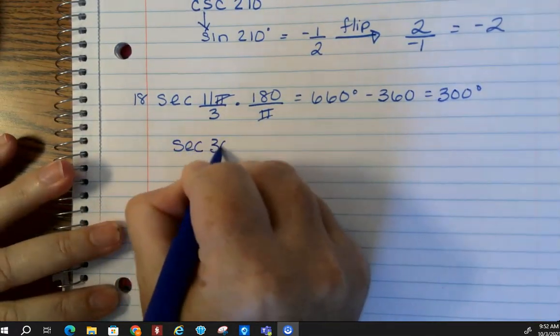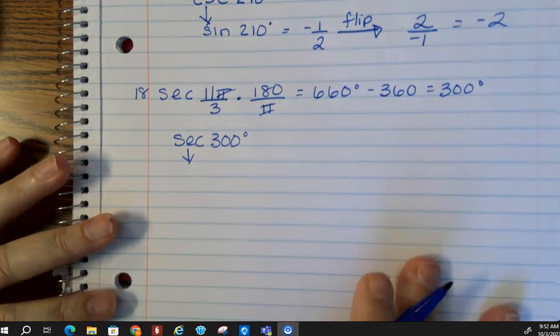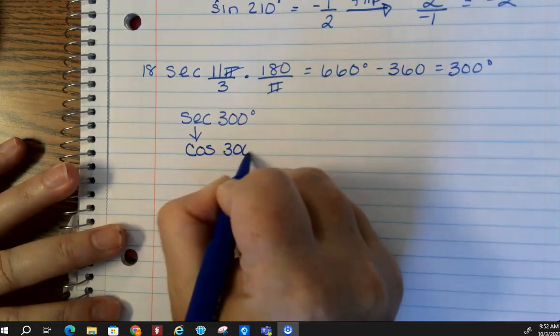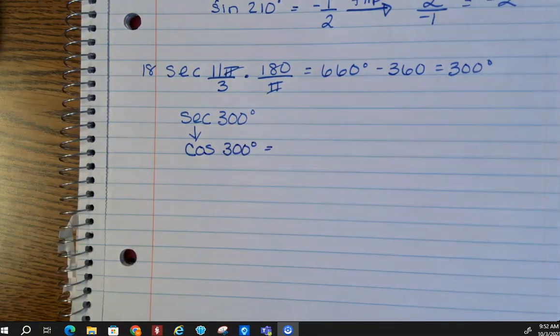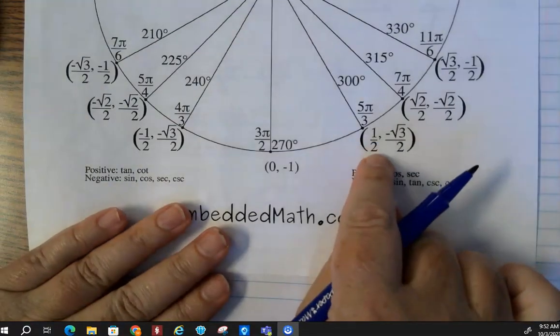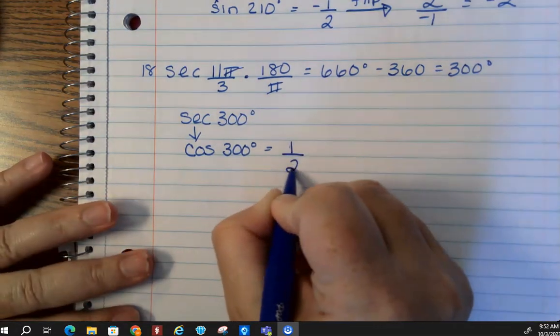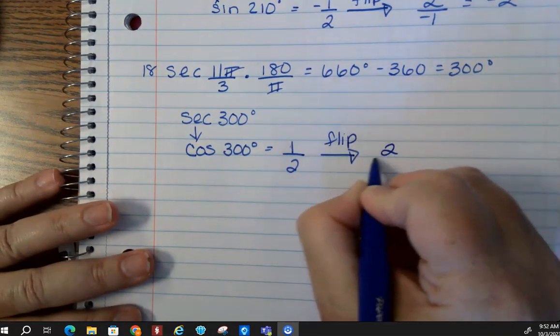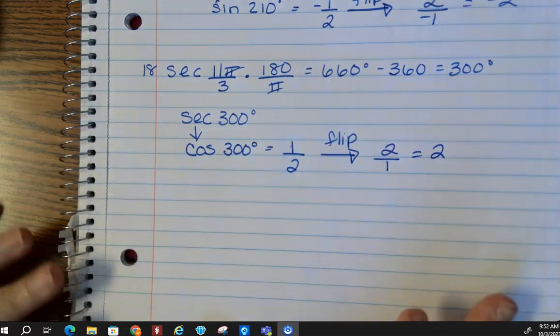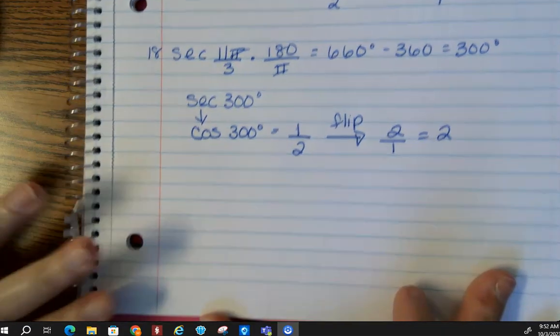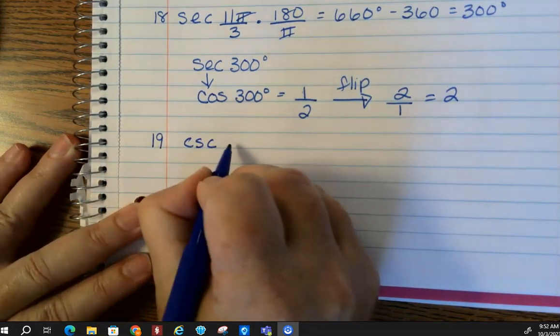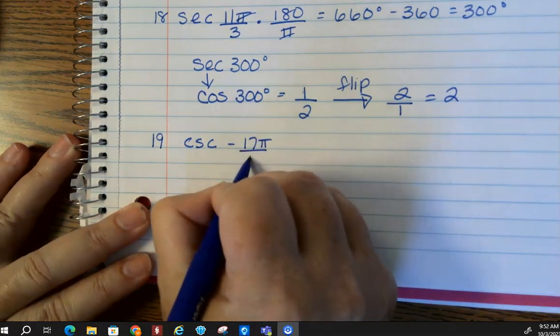So we get secant of 300 degrees is the question. So the reciprocal of secant is cosine. So cosine of 300 is going to be your x value, which is 1 half. And remember, we have to flip it, so we get 2 over 1, or just 2. Okay, I hope you're having fun. The unit circle is not that bad, right guys? Didn't think so either.